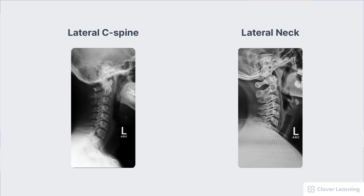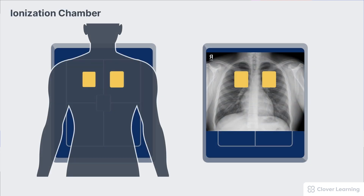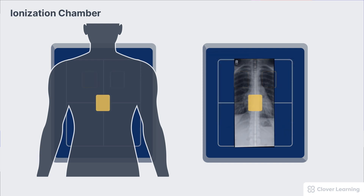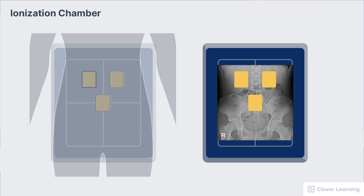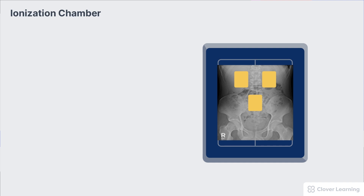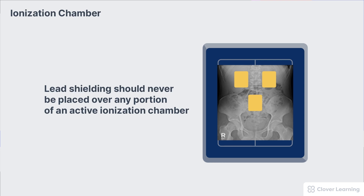This is also why it's very important to activate the correct AEC cells, as it differs for different body parts. For a chest X-ray, you would activate the outer two cells over the lung fields, since the lungs are the primary organs of interest. For a thoracic spine, you would activate only the center cell under the thoracic spine — we want a good exposure of the spine, not the lungs. For the abdomen, you would use all three cells to ensure the entire abdomen is correctly exposed. Additionally, lead shielding should never be placed over any portion of an active ionization chamber, as this would slow the flow of x-rays into the cell and significantly increase exposure time and patient dose.